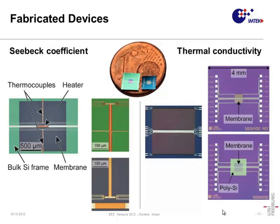The fabricated devices are shown on this slide. On the left-hand side, the test structure for the Seebeck coefficient is shown. The closer views show the cold junction of the thermocouple located on the bulk silicon in the upper image, and the hot junction and the heater located on the membrane in the lower image. On the right-hand side, the test structure for the thermal conductivity is shown. The upper image shows the reference structure without the polysilicon layer, and the lower image shows the actual test structure with the polysilicon layer. The closer view shows the membrane with the heater and two temperature sensors in the center and two further temperature sensors at the rim.